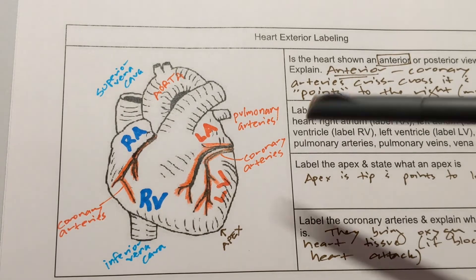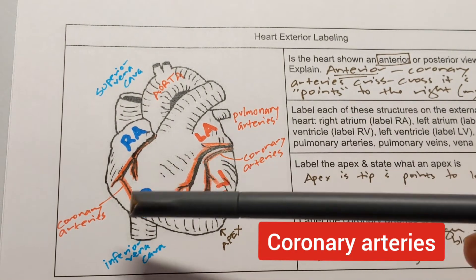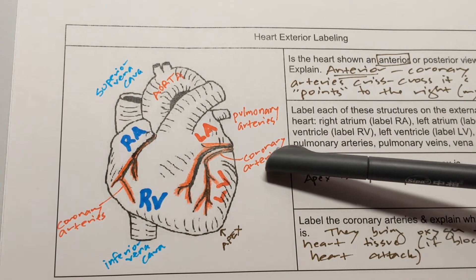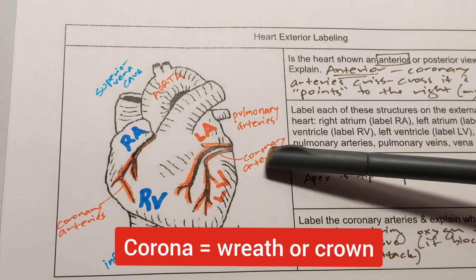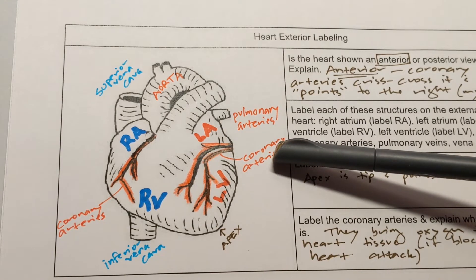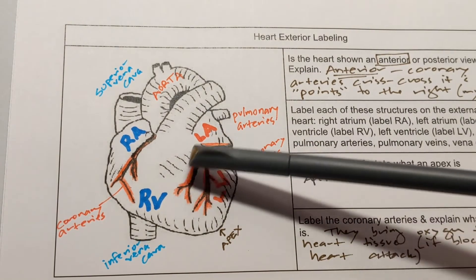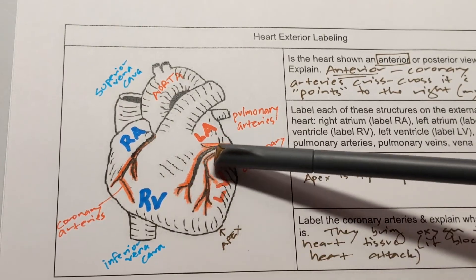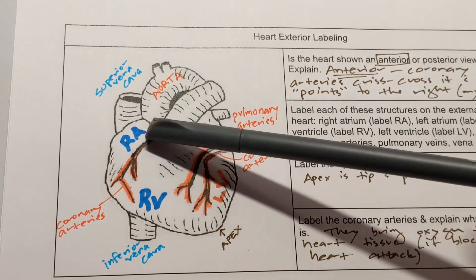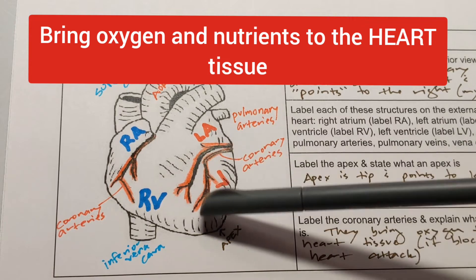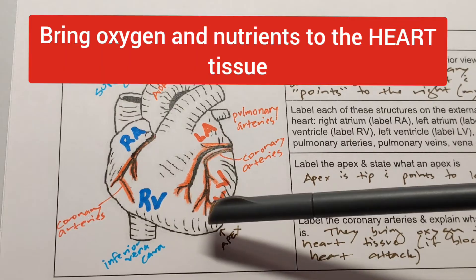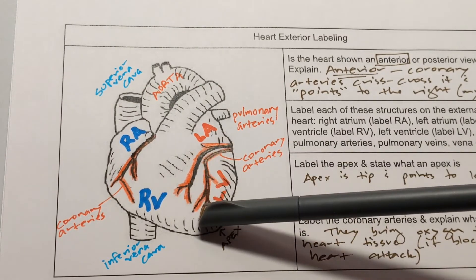The next thing I've labeled are the coronary arteries. I've labeled them on both sides and colored them red because they're full of oxygen. The word coronary might make you think of the word corona — they both come from the same root meaning crown or wreath, which has to do with their shape. The coronary arteries are named for the fact that they look kind of like a wreath around the heart. Their job is to get oxygenated blood from the aorta, wrap around the heart, and feed oxygen to all of the heart tissue, so the heart can only stay healthy if the coronary arteries are working right.